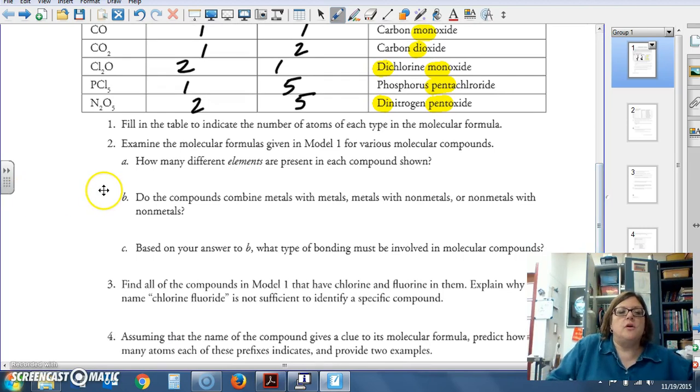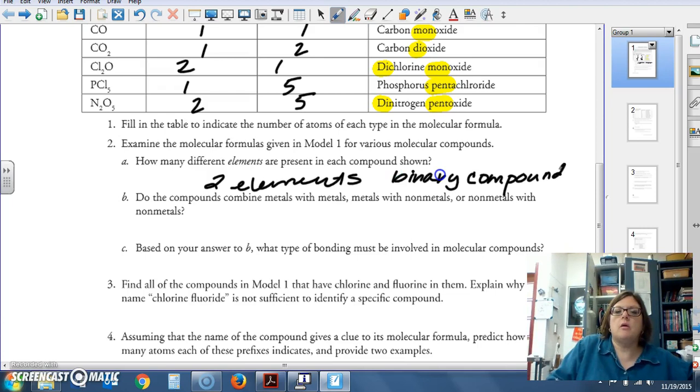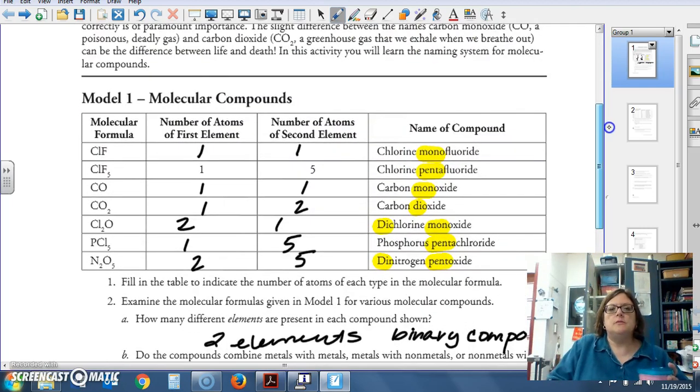You notice prefixes that tell us how many of the atoms are in each of these molecules. Now, first of all, A says how many different elements are present. There are two elements in each compound. So, these are binary compounds. Do the compounds contain metals with metals, excuse me, nonmetals, or nonmetals with nonmetals?